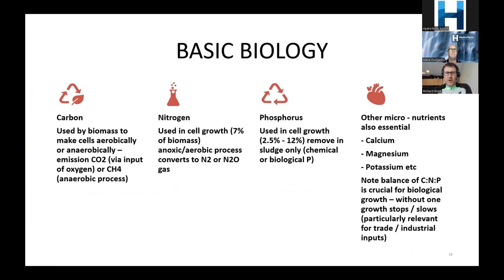Some basic biology: carbon is used by biomass to make cells, and aerobically or anaerobically we emit CO₂ or methane respectively. Nitrogen is a key nutrient used in cell growth, and the pathway for nitrogen removal is in the gas phase — so we're looking at a pathway for greenhouse gas emissions here, as well as methane as another key greenhouse gas emission element. Phosphorus can only be removed within biosolids — that's the pathway for getting rid of solids.